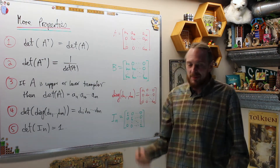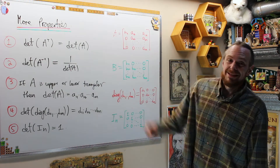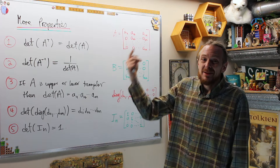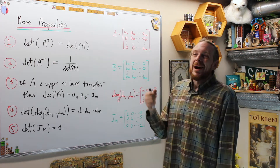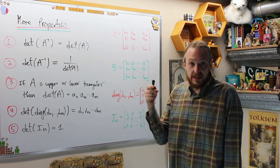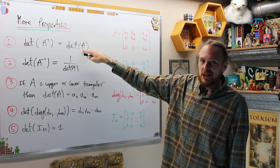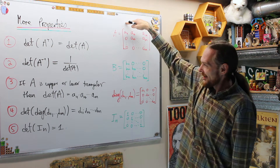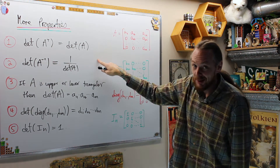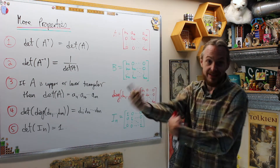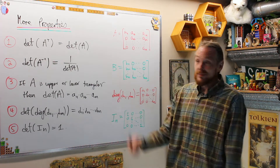So we're going to do five more determinants properties. Property one says if you have the determinant of A transpose, that's going to be the same number as if you computed the determinant of the original matrix A. Why is this? This is a direct consequence or corollary to the cofactor expansion theorem. If I have A and I choose to compute the determinant using cofactor expansion along row 1, then when I transpose that becomes column 1 in A transpose and I'll just cofactor expand along column 1 in A transpose. I'll get the exact same number because it's all the same computations.